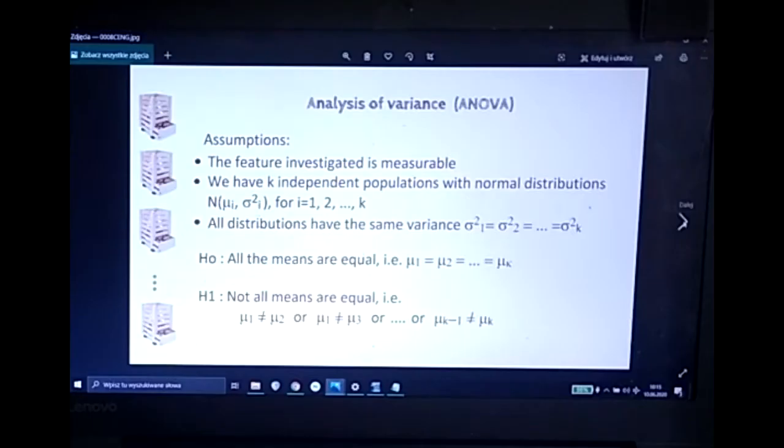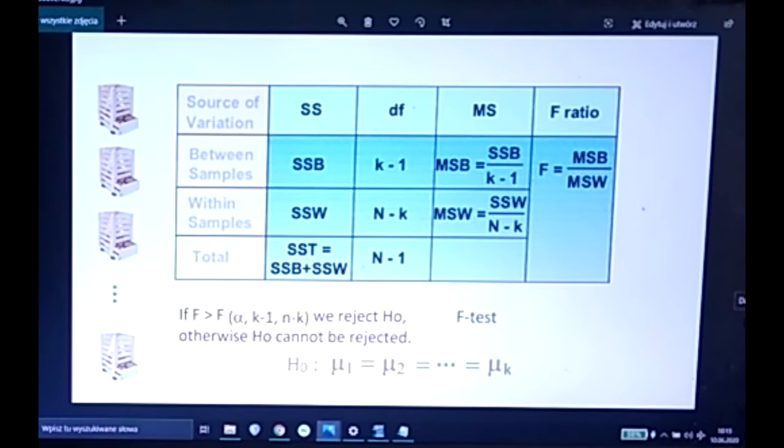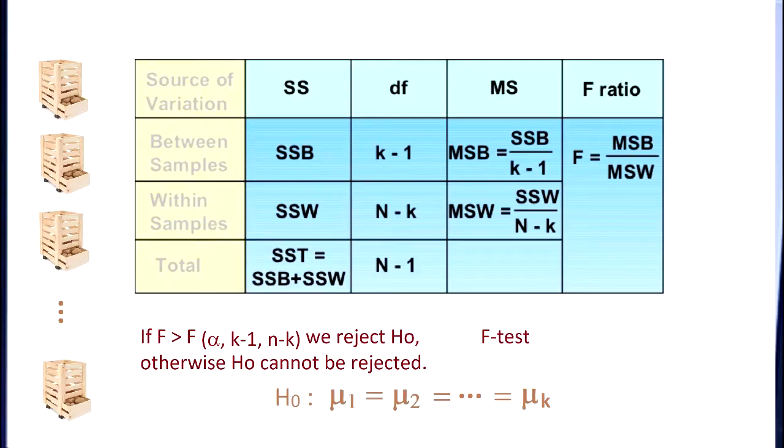How do we calculate and what? We have the source of variation is between samples, within samples, and total. As for degrees of freedom between samples, we have K minus 1, within samples, N minus K, and total N minus 1, where N is the total number of potatoes or objects measured. Let me calculate the mean squares. What are the mean squares? The sum of squares divided by the number of degrees of freedom. As for between samples, we have SSB divided by K minus 1, because we have K groups, K independent groups divided by K minus 1. As for within samples, we divide by N minus K.